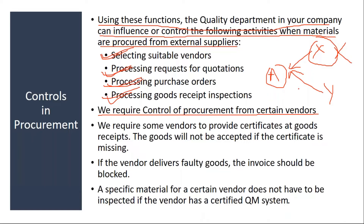Another scenario: if you want to purchase material A from a new supplier Z, that supplier has to be released by the quality department first. That kind of control can be managed through controls in procurement.